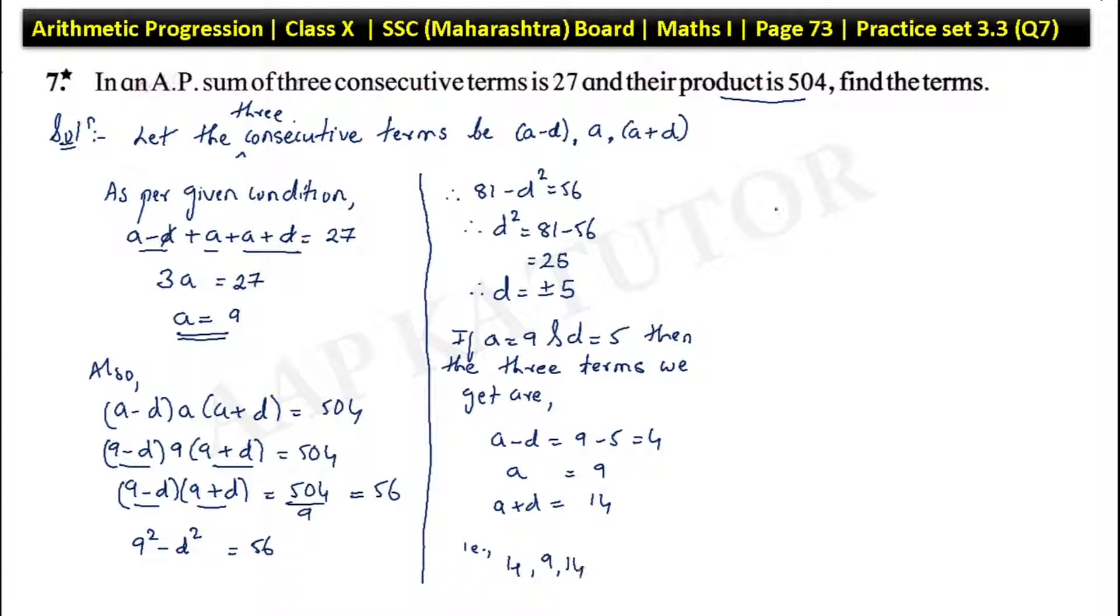Also, on the other way round, if a equal to 9 and d equal to minus 5, then the three terms we get are: a minus d which is 9 minus minus 5 which is 14, a which is 9, and a plus d which is 9 minus 5 which is 4. So that is 14, 9, 4.